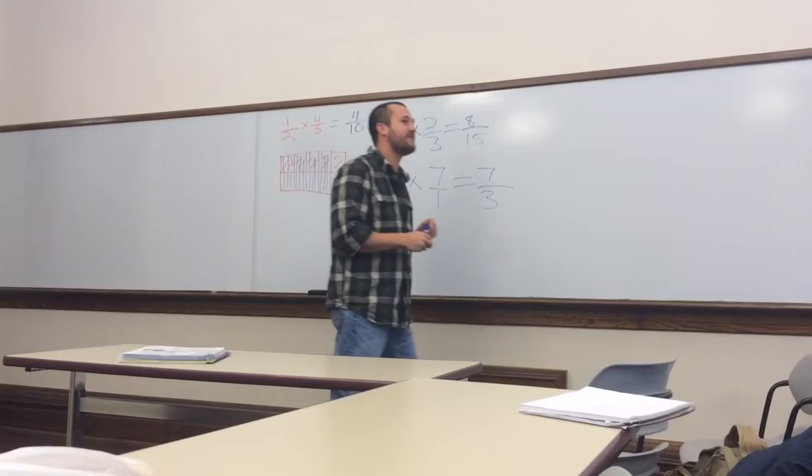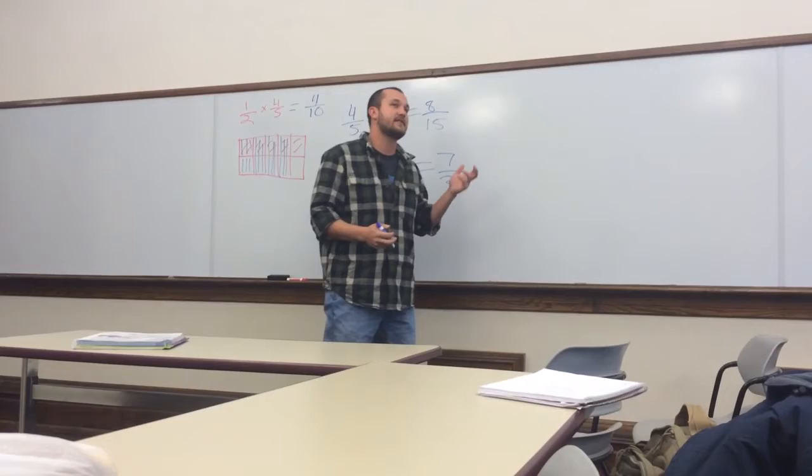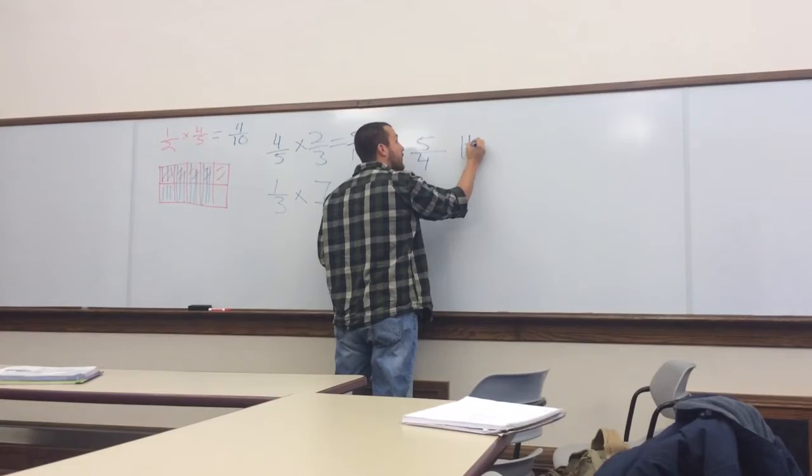You guys get a pretty good grasp on this, or do we want to do one more? One more. All right, let's see what we can do here. Let's use an improper fraction. And if you guys don't recall from our previous lessons, an improper fraction would be like 5 fourths.